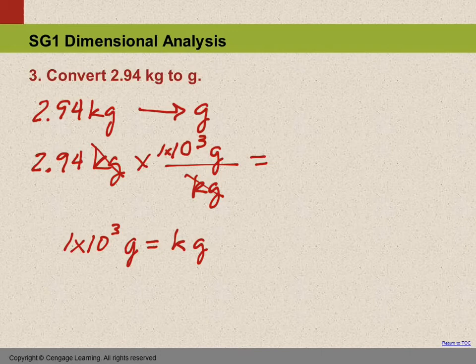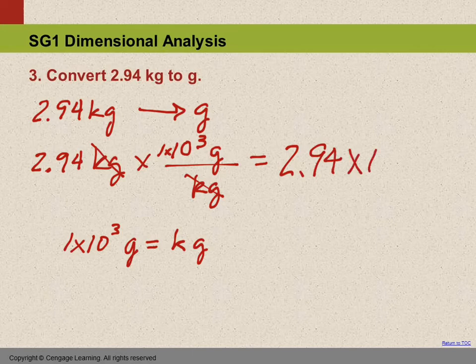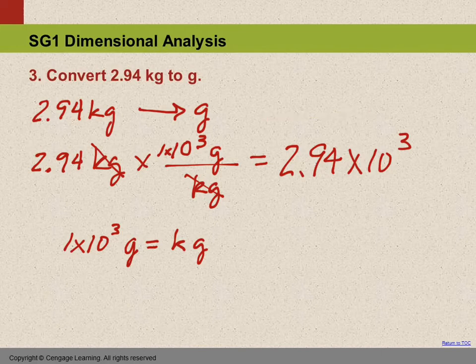So there we have our equation. We get out our calculator. We take 2.94 times 1EE3. And in scientific notation, that will be 2.94 times ten to the third. And the unit is really important—the unit is gram.